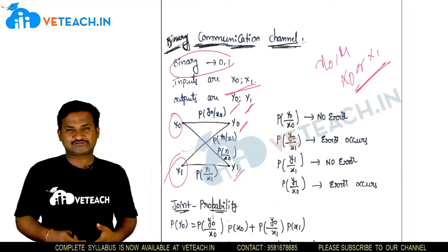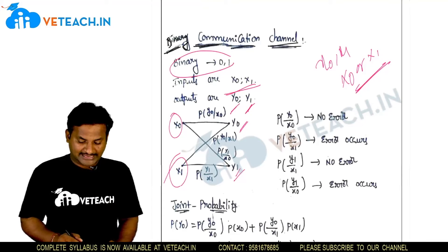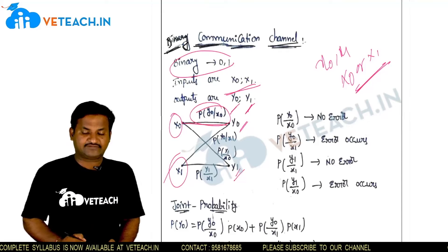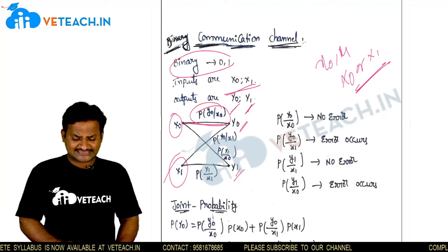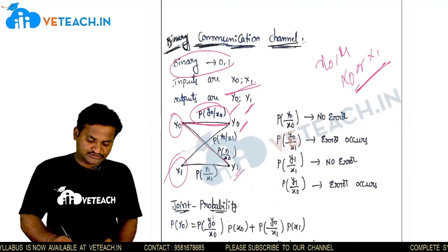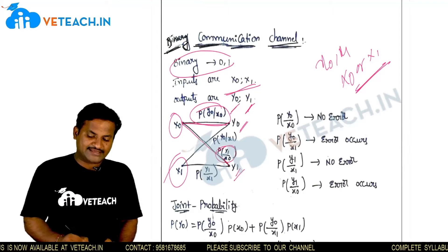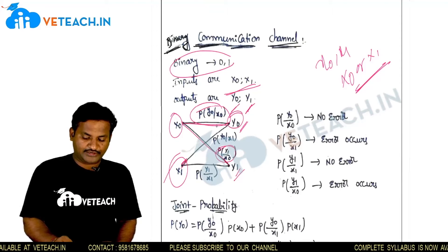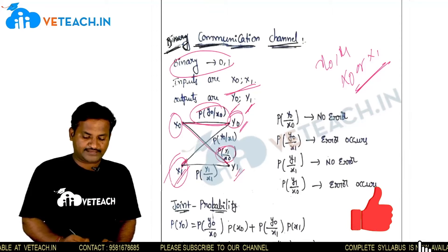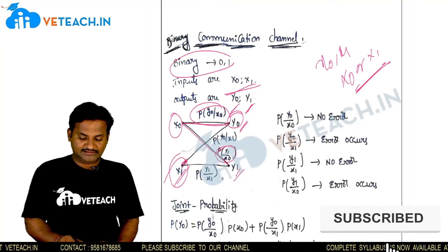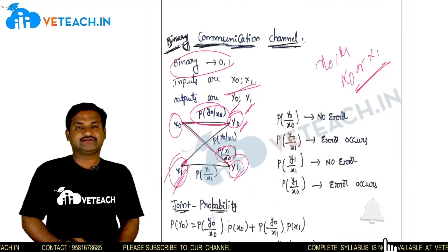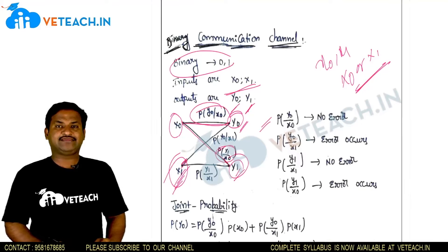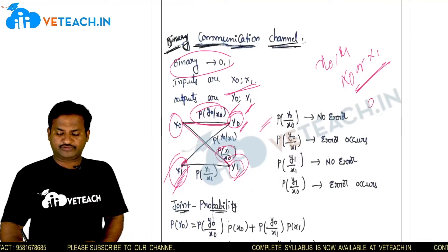The conditions are: p(y0|x0), p(y1|x0), p(y0|x1), and p(y1|x1). So there are four conditional probabilities — output given input — for the binary channel in information theory.